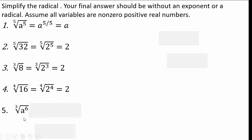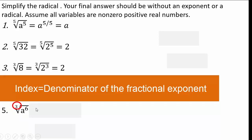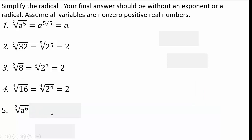Now we have cube root of a to the power 6. This is a to the power 6 raised to the one third power — so one third of 6 is 2, giving a squared. So a to the power 6 thirds equals a to the power 2.